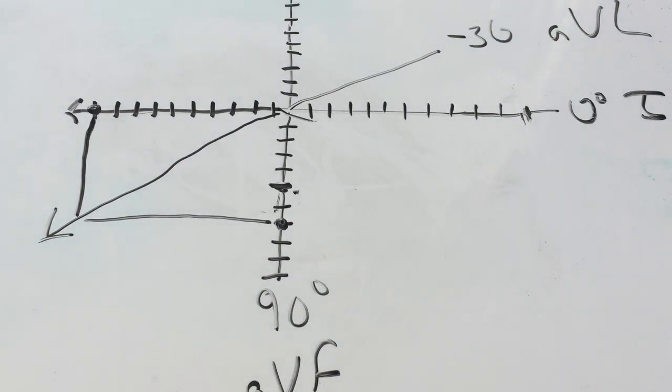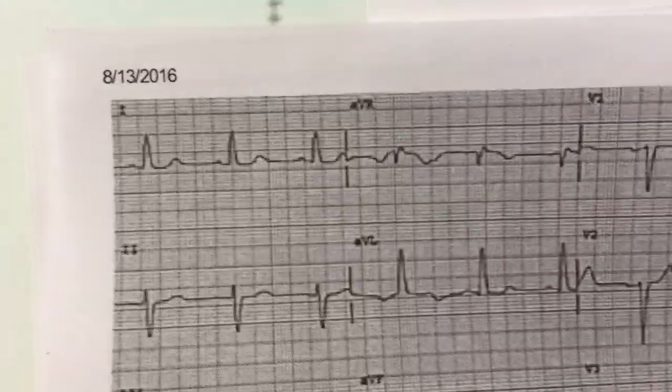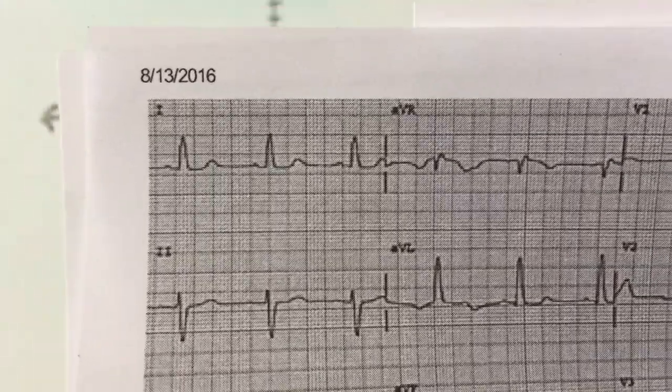This EKG was actually of a right ventricular hypertrophy, but you can also see this with hyperkalemia. You can see it with lateral MIs and things like that.